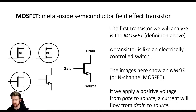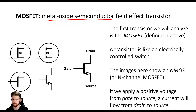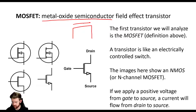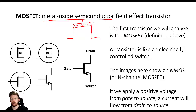A MOSFET is a metal oxide semiconductor field effect transistor. Semiconductor is the material the MOSFET is made out of — usually silicon but it can be other types. Metal oxide describes part of the process of how a MOSFET is made. Looking at a cross-section, we have three terminals, and for one of them — the gate — there is a thin layer of metal oxide between the gate terminal and the body of the MOSFET.